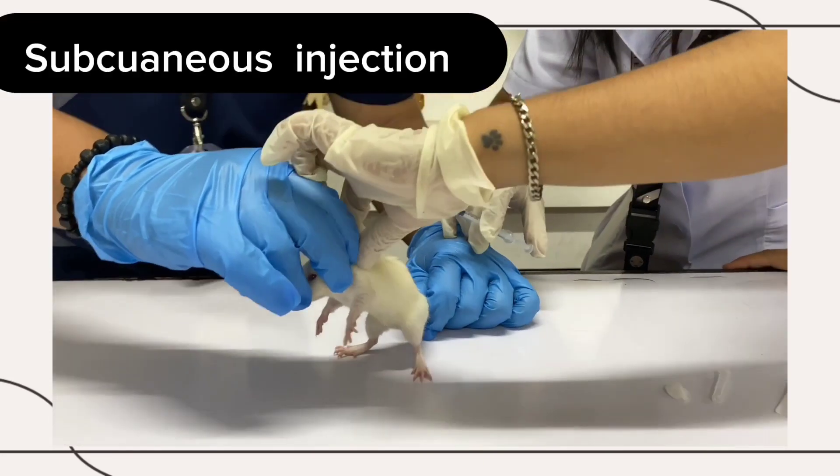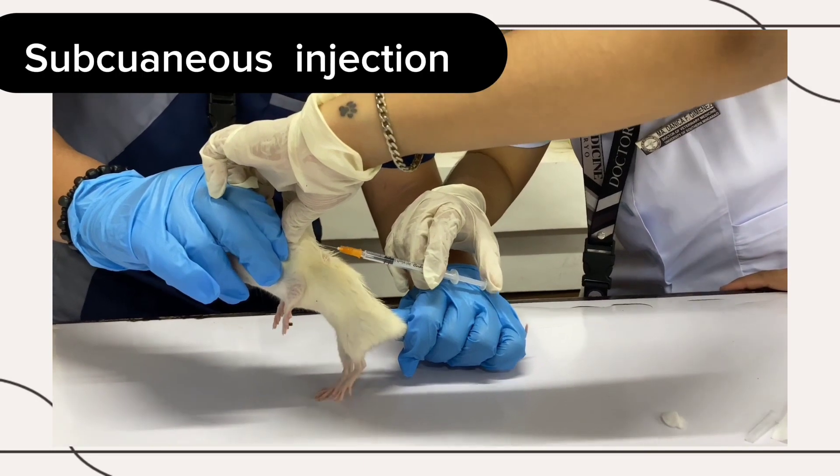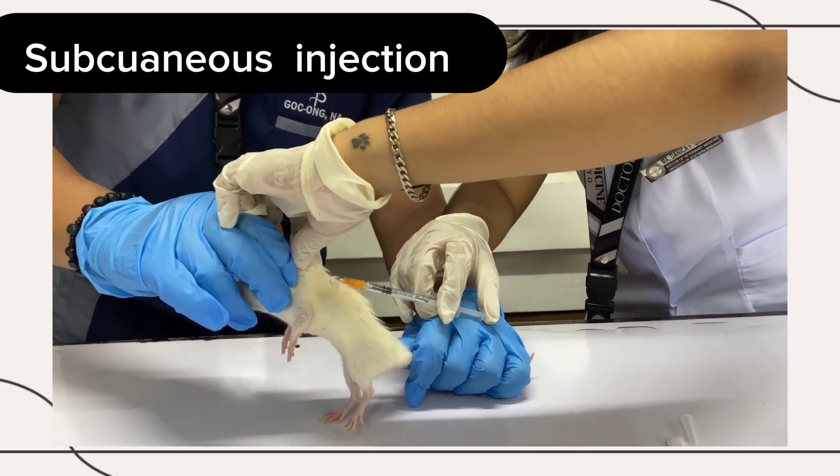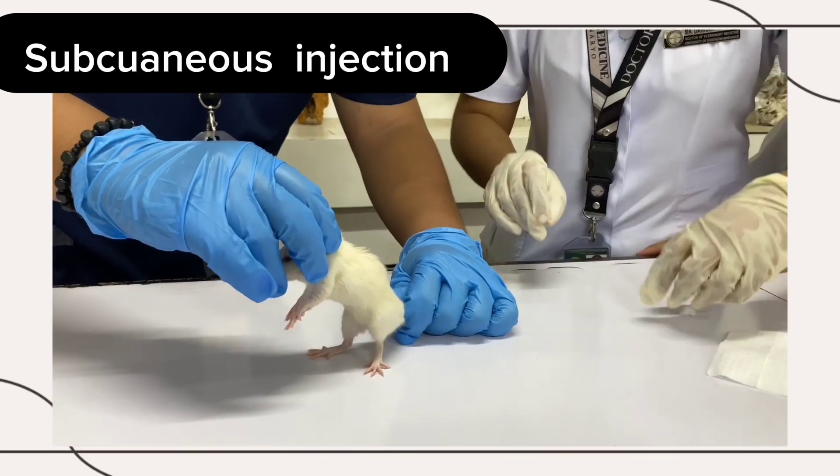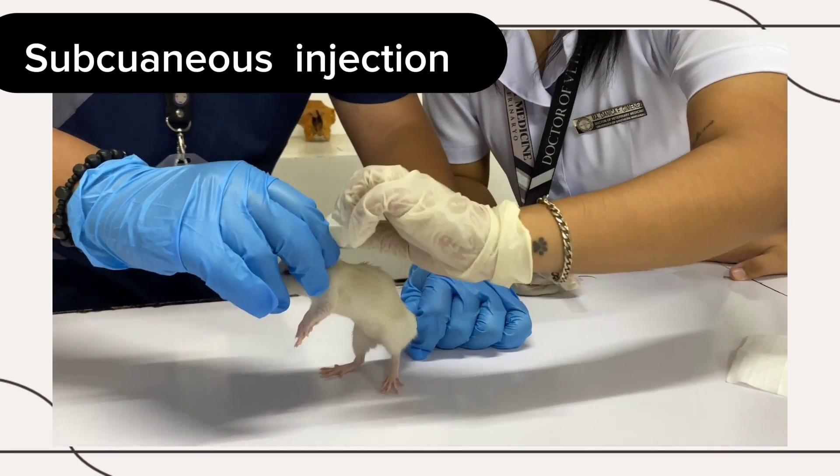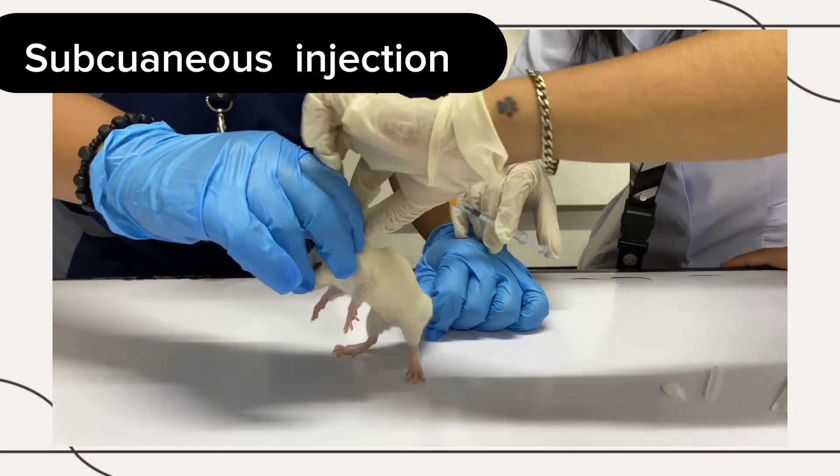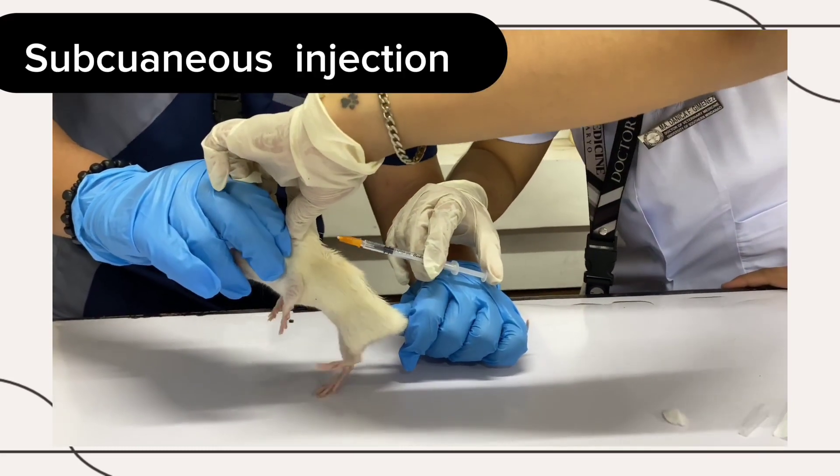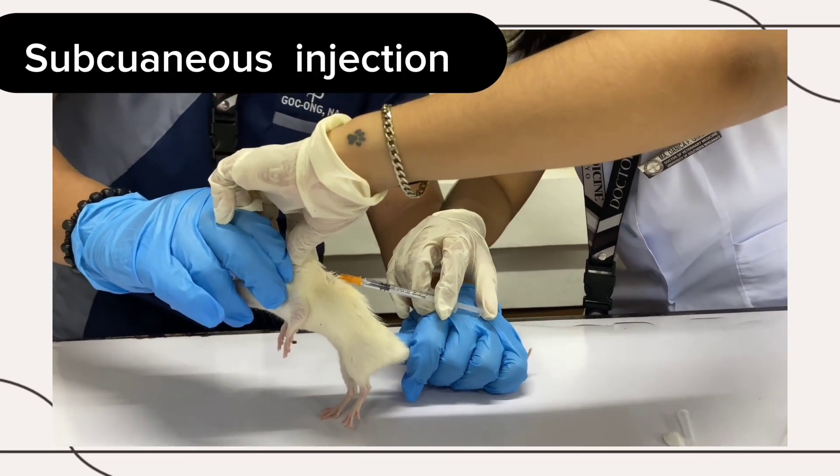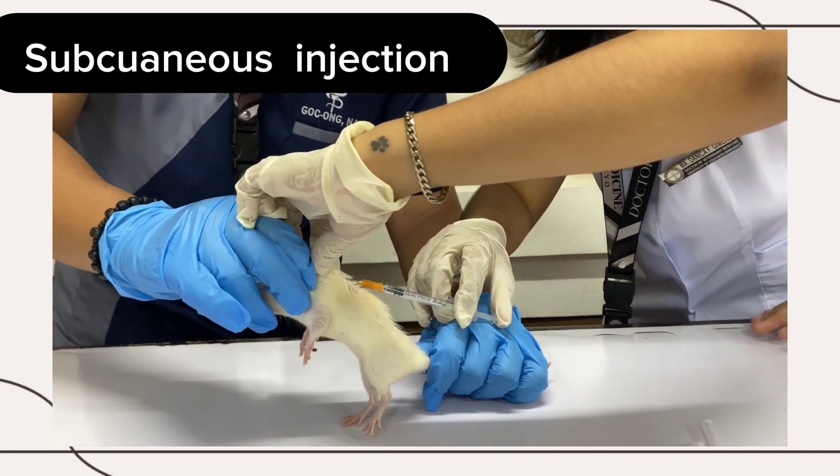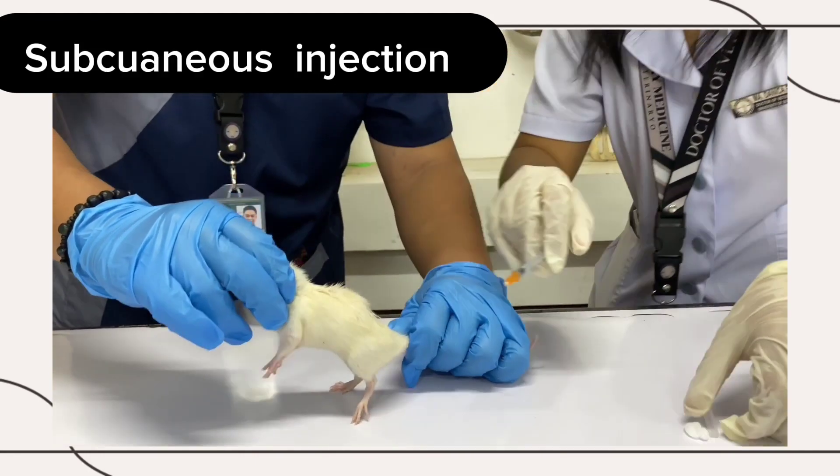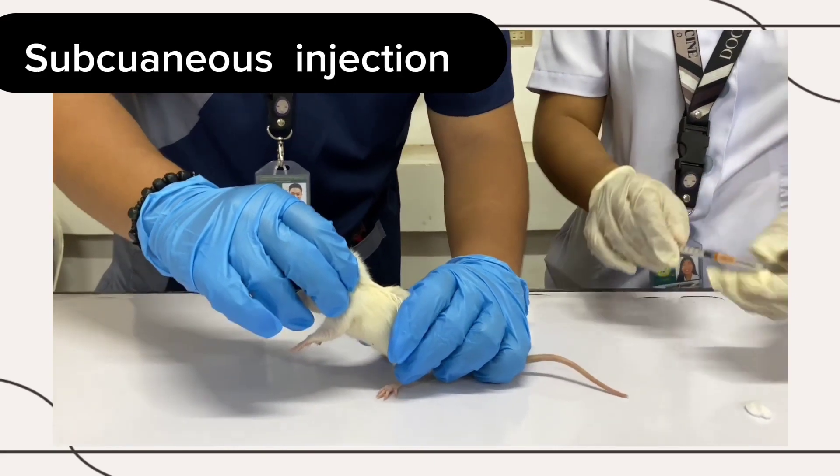Subcutaneous Injection: This method involves injecting a substance under the skin of the mouse. Prepare the injection site by cleaning it with alcohol. Pinch up a fold of skin between the thumb and forefinger. Insert the needle at the base of the skin fold at a 45 degree angle. Slowly inject the substance. Remove the needle and gently massage the injection site.